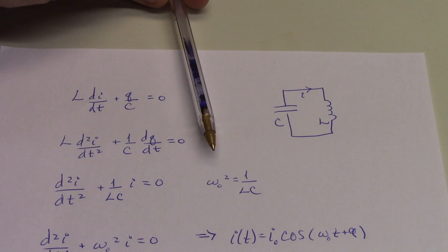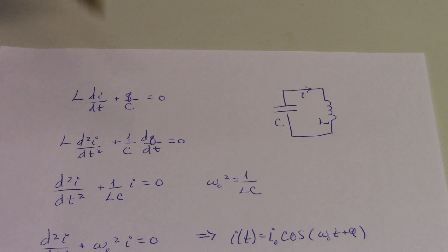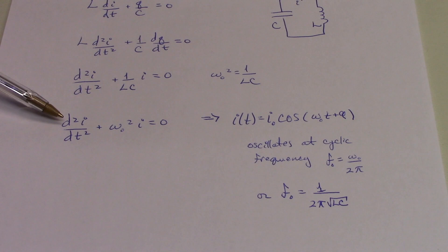And moreover, if we define a parameter omega naught squared to be one over LC, then we can simply rewrite that equation as d²I/dt² plus omega naught squared I equals zero. And this is a differential equation which is rather simple to solve.